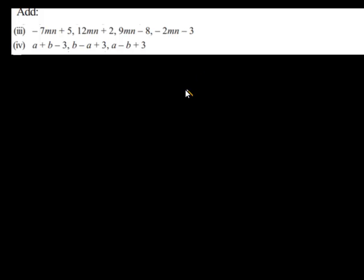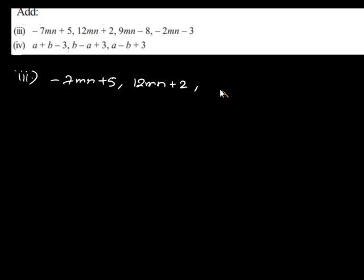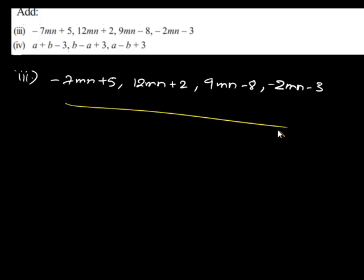Let us move to our next question. We have negative 7mn plus 5, 12mn plus 2, 9mn minus 8, and negative 2mn minus 3. Here we have to add all these algebraic expressions.